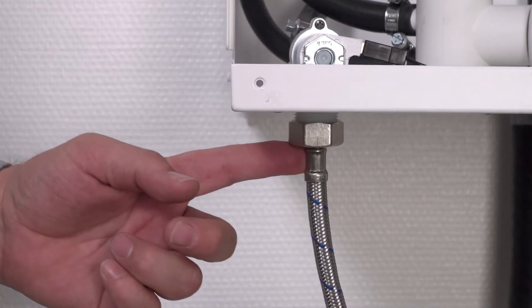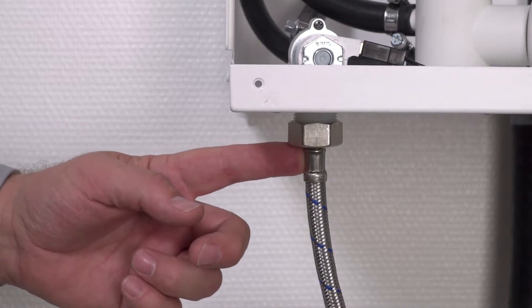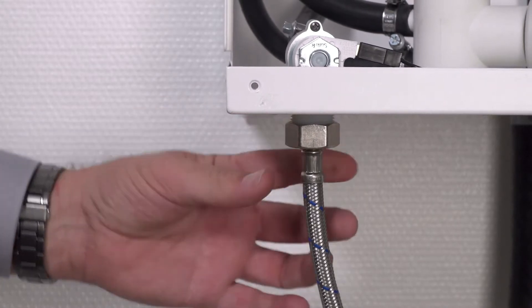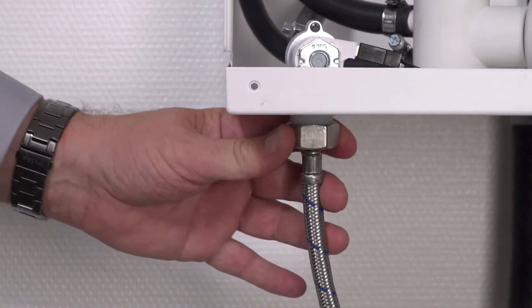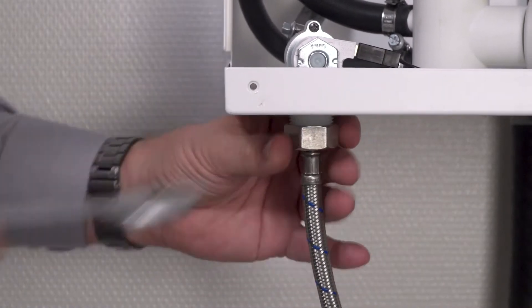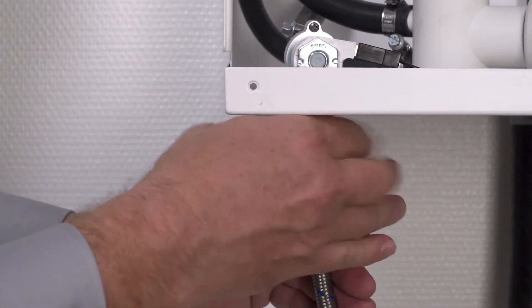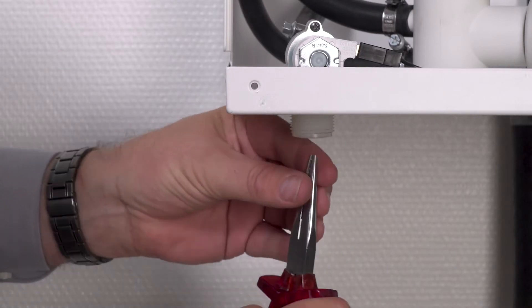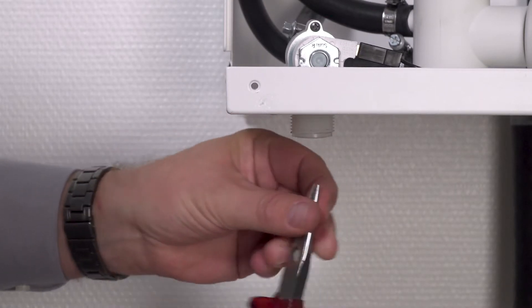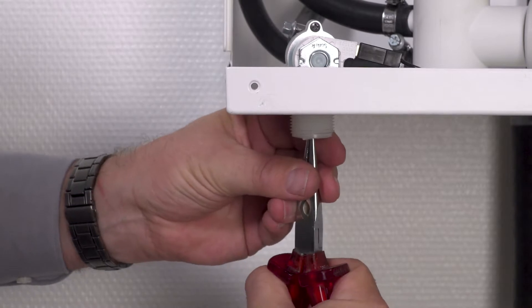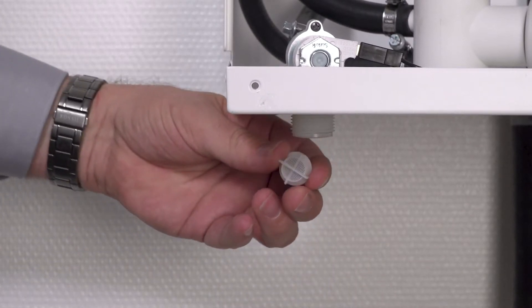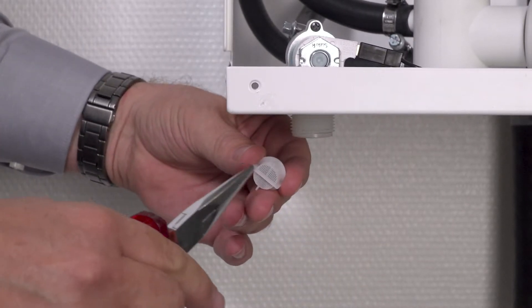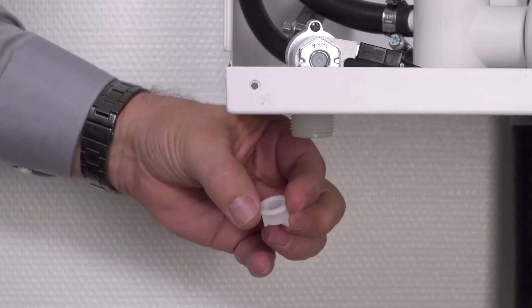A further maintenance step is to clean the sieve in the solenoid valve. To do this, I loosened the nut found underneath the unit and simply pull the sieve out of the guide with a pair of pointed or flat-nosed pliers. The sieve can be cleaned under running water and reinserted.